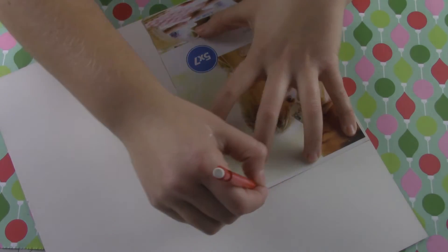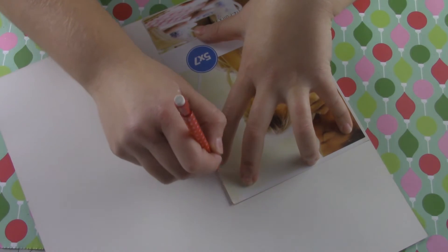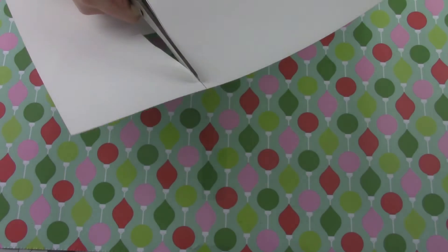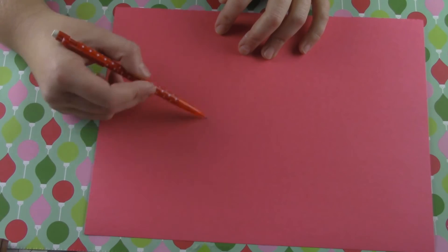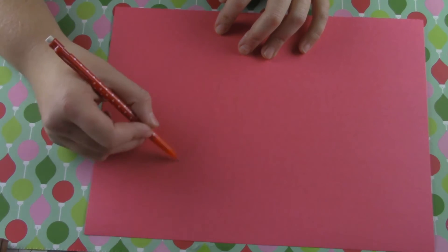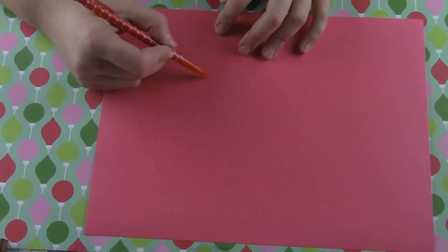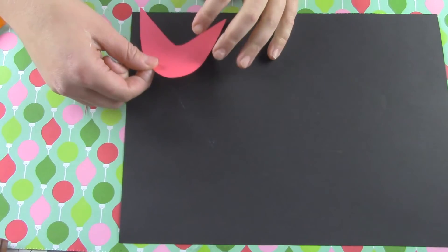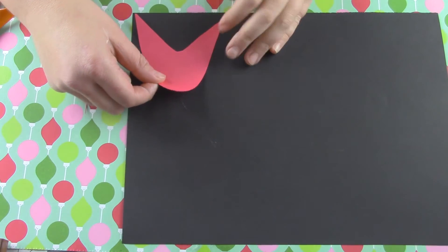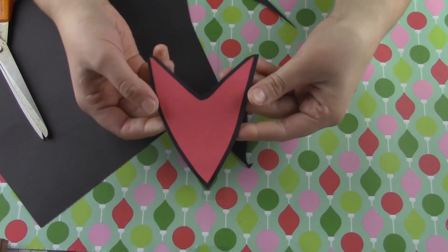First, we're going to make the background like we've done in all the picture frames where I just trace the inner picture from the frame and then cut that out. I'm using some red construction paper and a pencil to draw out the Star Trek symbol, the logo that goes on their shirts and then I cut that out and glue it onto some black construction paper and I'm going to cut that out leaving a trim around the red.